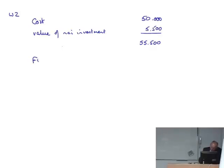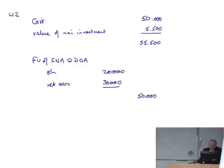The fair value of the subsidiary net assets at date of acquisition: shares of 20,000, retained earnings 30,000. There are no fair value adjustments, so 50,000 of the subsidiary fair value net assets at date of acquisition.